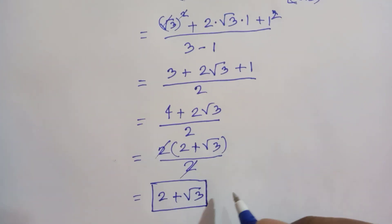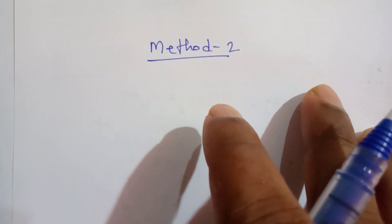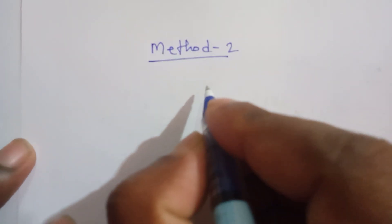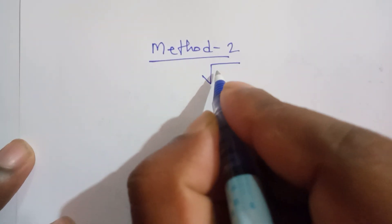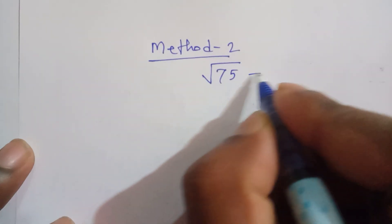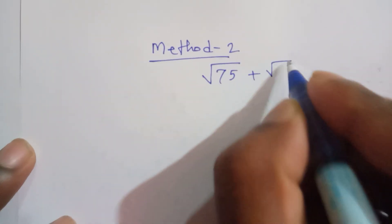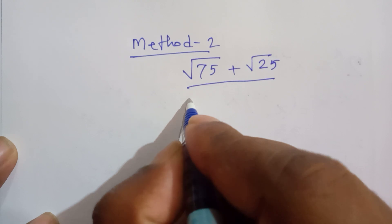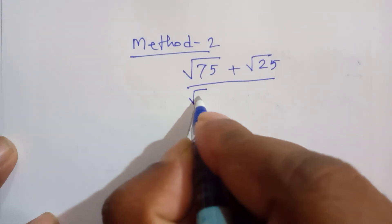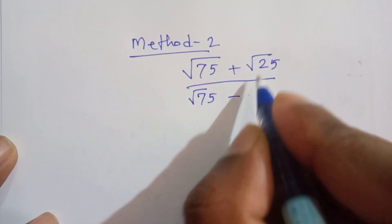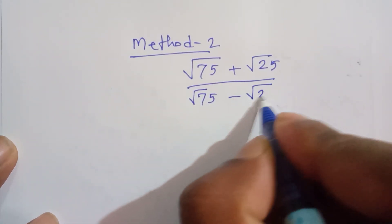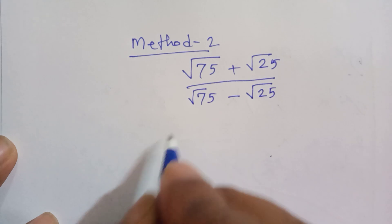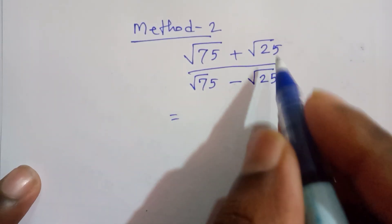Method 2: We have the same expression — under a square root of 75 plus under a square root of 25, over under a square root of 75 minus under a square root of 25. First, we multiply the numerator and denominator by the conjugate.